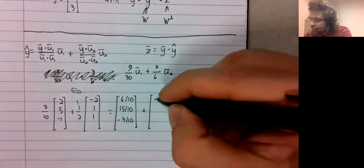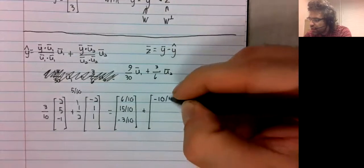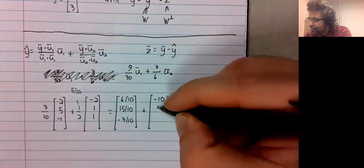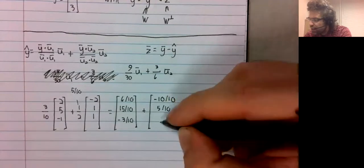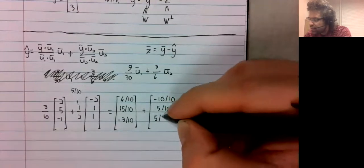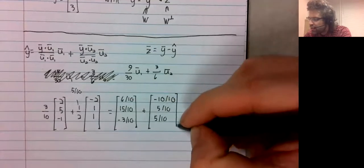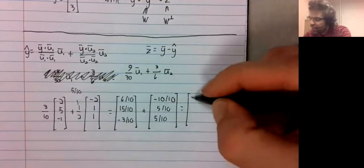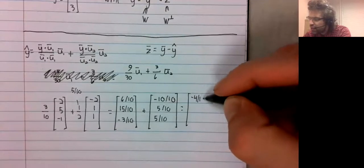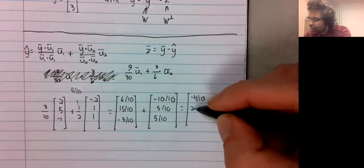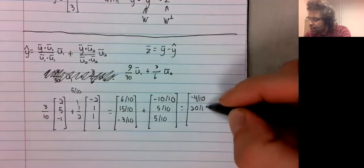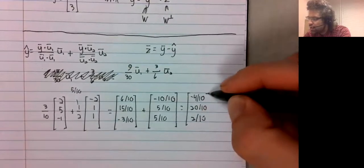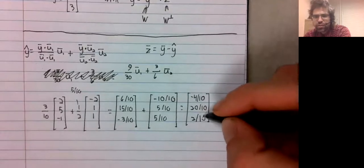So negative 10 tenths, 5 tenths, 5 tenths. I make that negative 4 tenths, 20 tenths, 2 tenths.